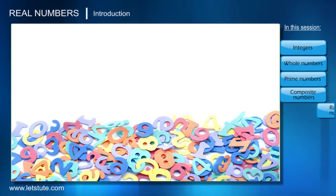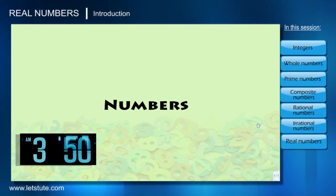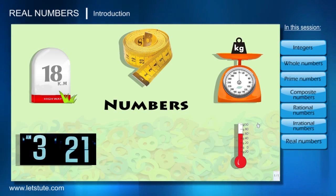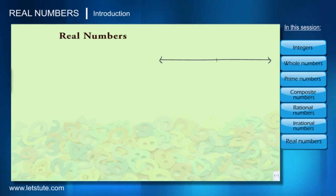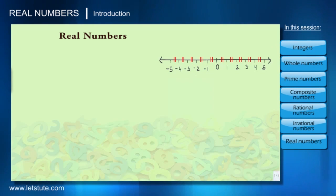Hello everyone. In this session we'll talk about numbers that we use in our everyday life in the form of time, distances, size, weight, temperature, etc. In mathematics, all these numbers can be represented on a number line, so they are called real numbers. In the middle of the number line we have zero, and on the right hand side and left hand side of zero we have positive numbers and negative numbers that are evenly spaced.